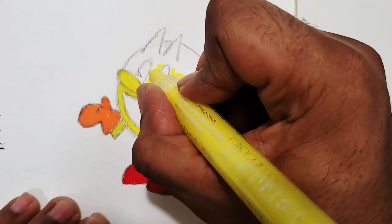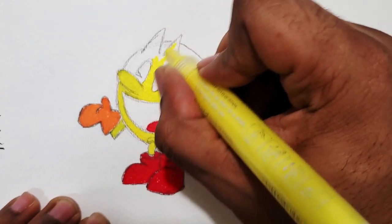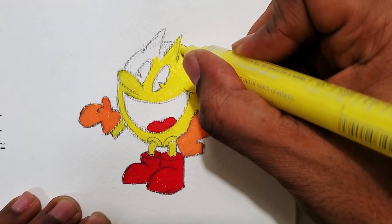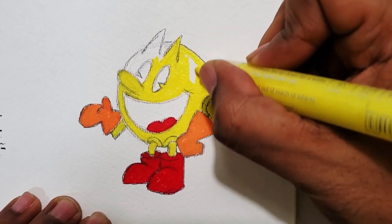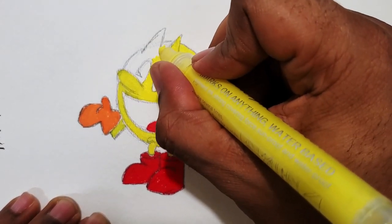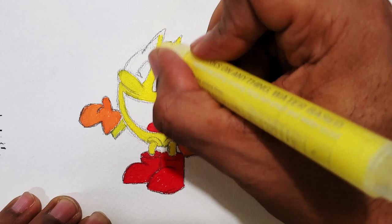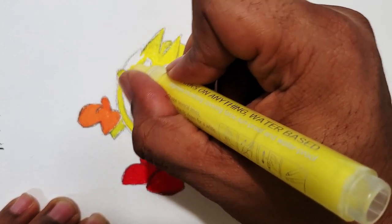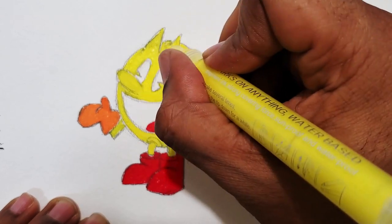I'm coloring in the body right here, the main part of the body with the yellow. I like that the pencil marks are still showing through, but I'm not trying to cover over the pencil because I don't want it to smear, so I'm trying to avoid the pencil marks. If I accidentally hit it, it's not that bad.